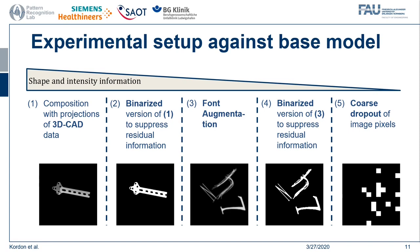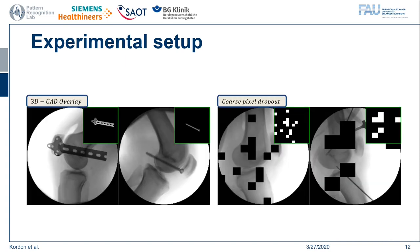A similar setup was done for the font augmentation. Here we note that our font augmentation yields less realistic shape but can still achieve realistic intensity distributions, and again we performed a binarized version. As a last strategy we performed a coarse dropout of image pixels where neither shape nor intensity information are retained. You can see examples for both the overlay with projections of 3D CAD data on the left side and the dropout of coarse image regions on the right side.